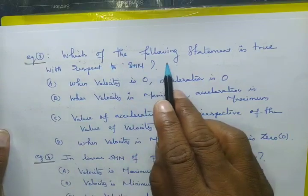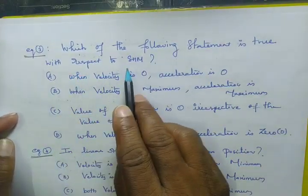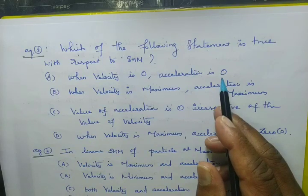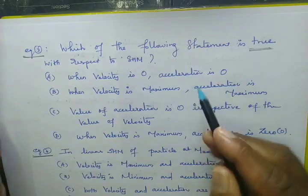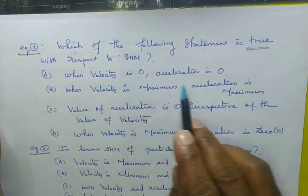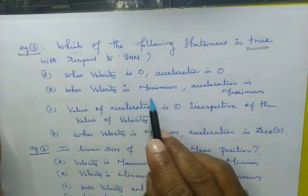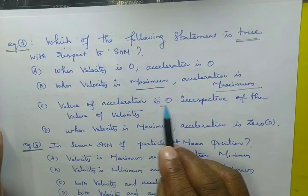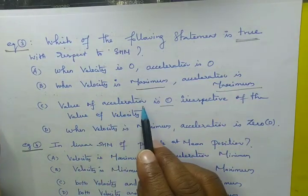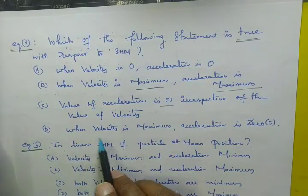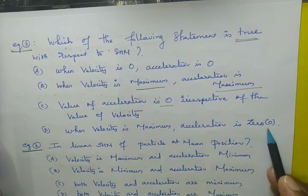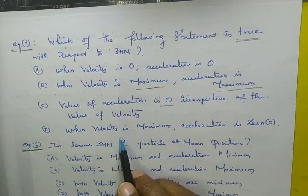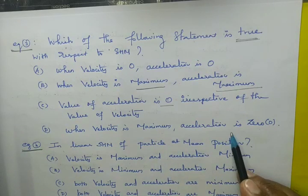Which of the following statements is true with respect to SHM? When velocity is 0, acceleration is 0 — is that true? When velocity is maximum, is acceleration maximum? The correct statement is: when velocity is maximum, acceleration is 0. This is correct in simple harmonic motion.